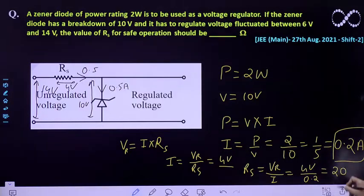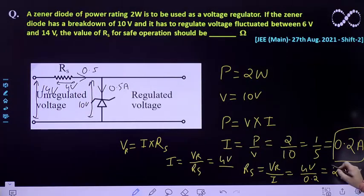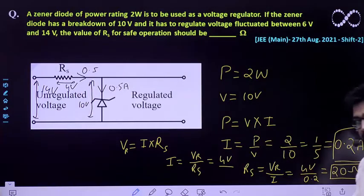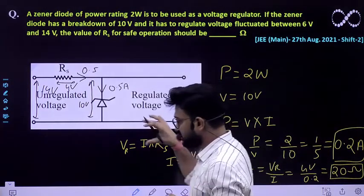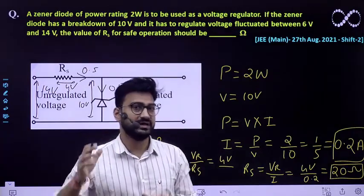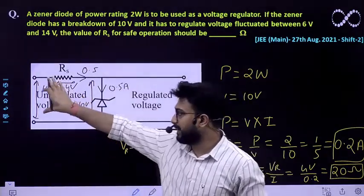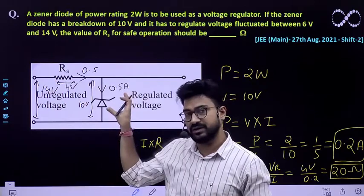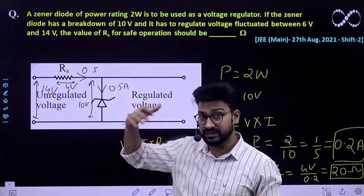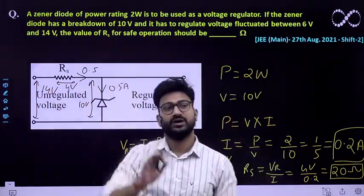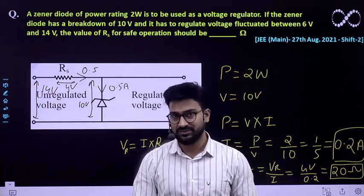20 ohm is the correct answer that we are getting. For this type of question you have to take the boundary condition at which the maximum voltage that it can regulate is 14 volt. So we will be considering that situation only. I hope this question is clear to everyone. Thank you.